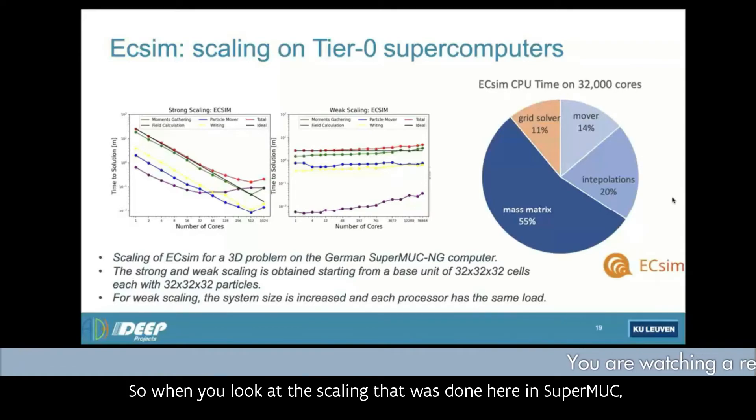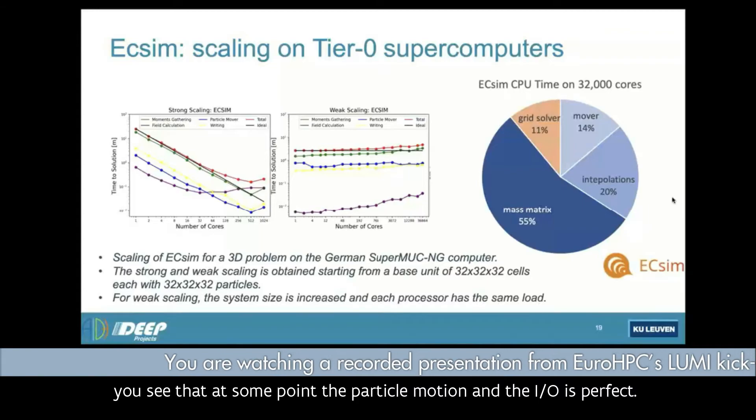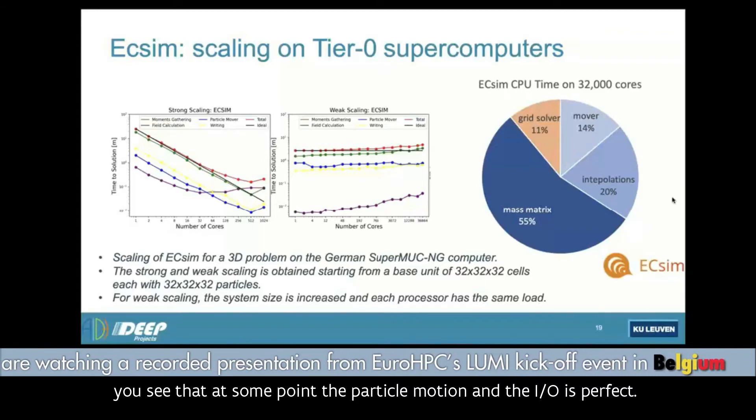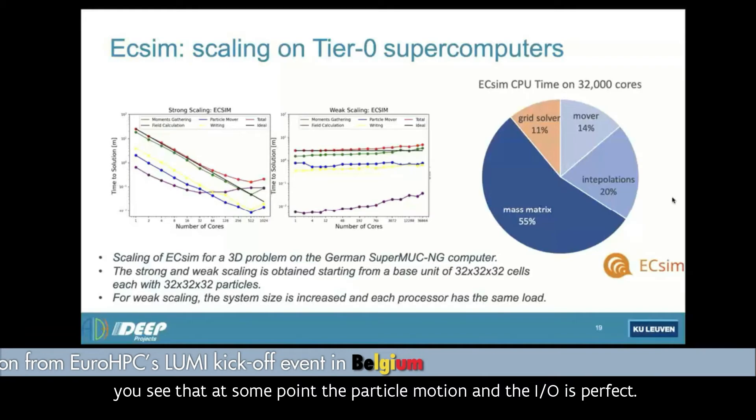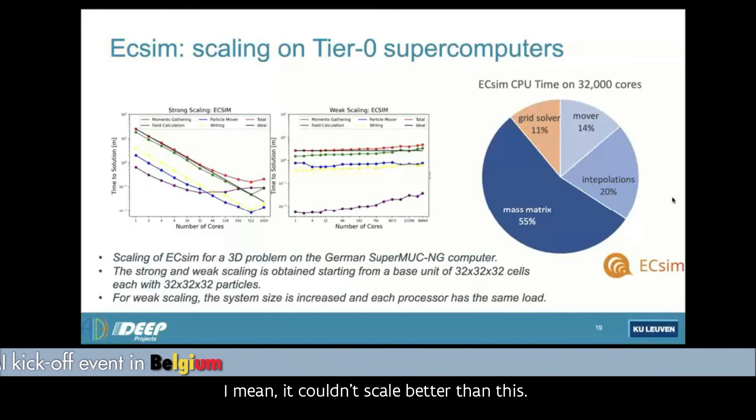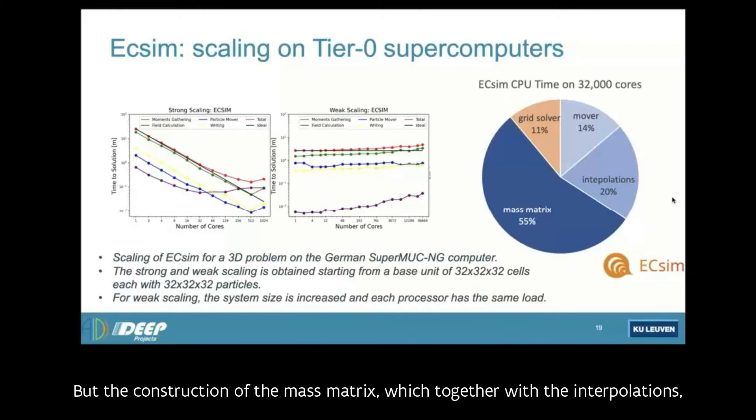It's an opportunity because these operations based on the particles are very much suitable for GPUs. When you look at the scaling that was done here on SuperMUC, you see that the particle motion and the I/O is perfect. I mean, it couldn't scale better than this.